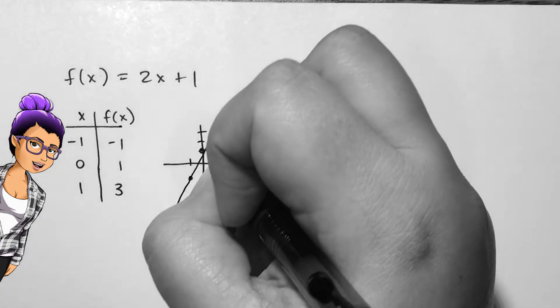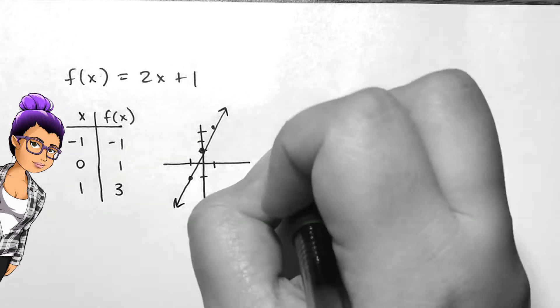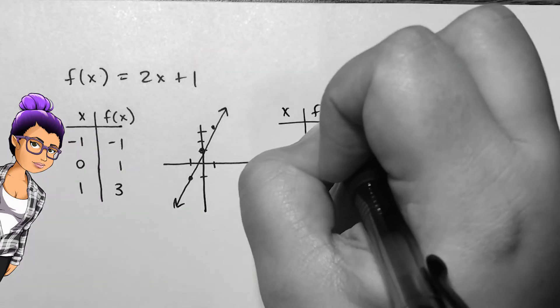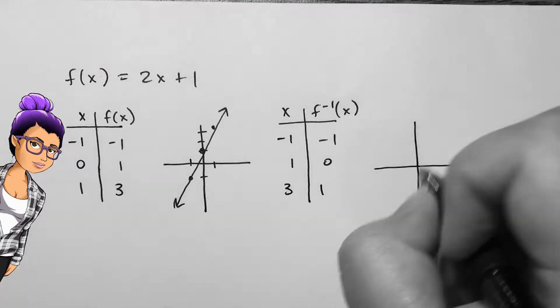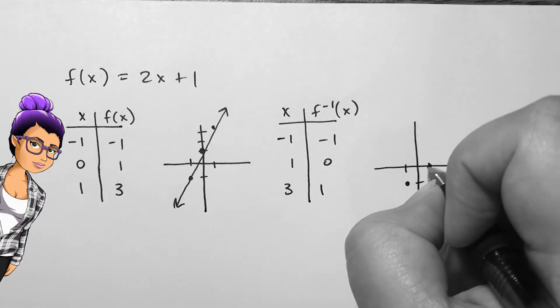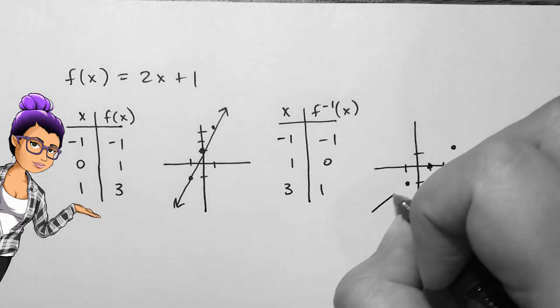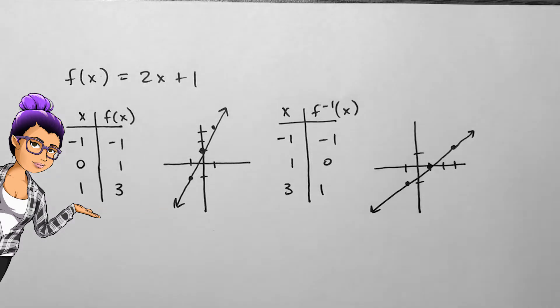Say I want to also graph the inverse of this function. Since inverse functions have the inputs and outputs switched, I can plot the points (−1, −1), (1, 0), and (3, 1). I have graphed the inverse of f(x) without finding it algebraically.